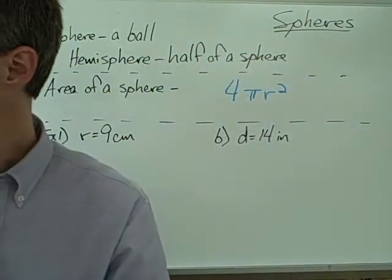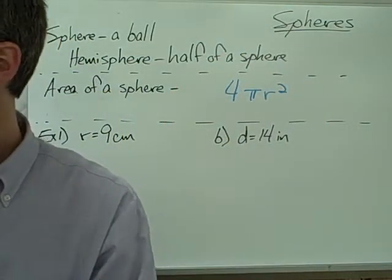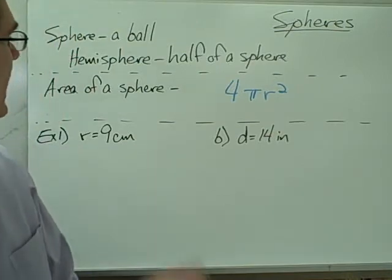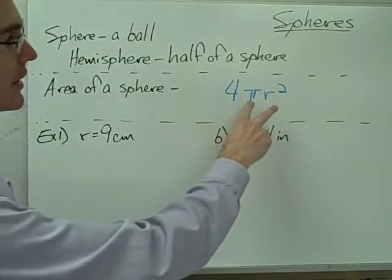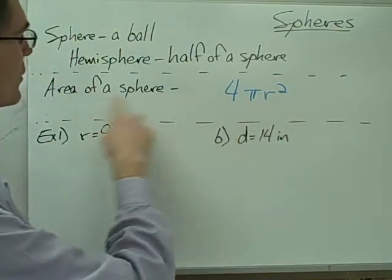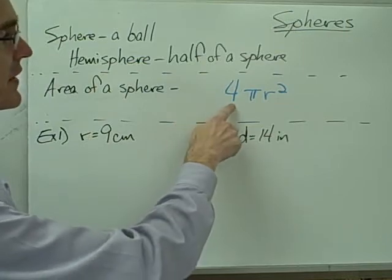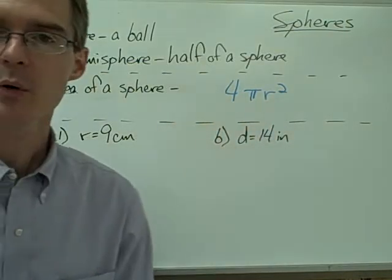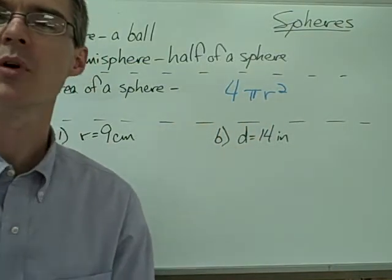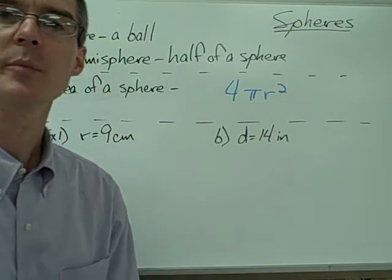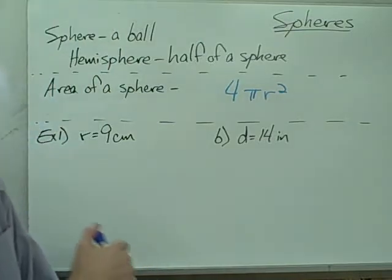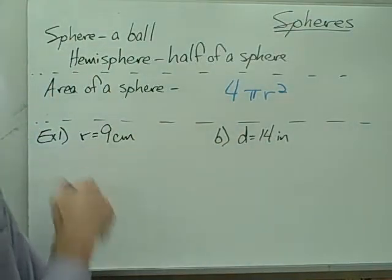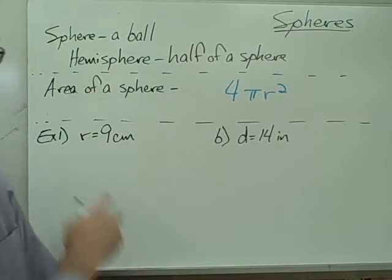The area of a sphere — you may recall the area of a circle is pi times r squared. Well, the area of a sphere is 4 times pi r squared. We're going to look a little bit more at where that formula comes from in class, but for now we're just going to use the formula to calculate a couple of areas.